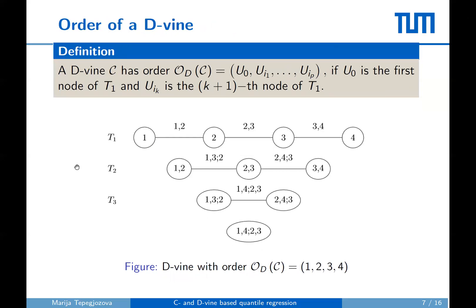A D-vine tree sequence can be characterized by the order of the variables in the first tree sequence. Thus, we can define the order of a D-vine simply as the order of the variables appearing in the first tree. For example, the D-vine in the picture has the order one, two, three, and four.